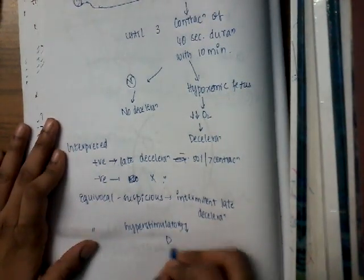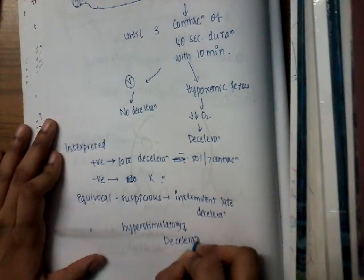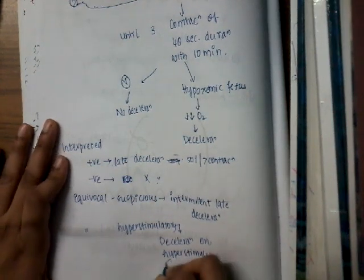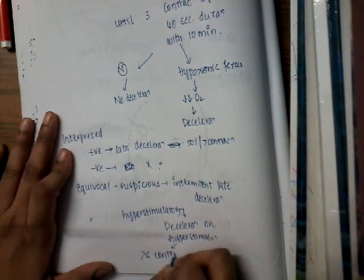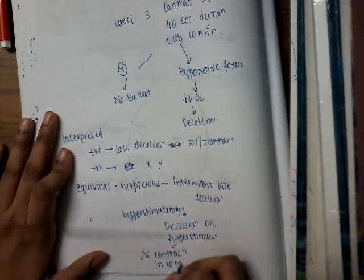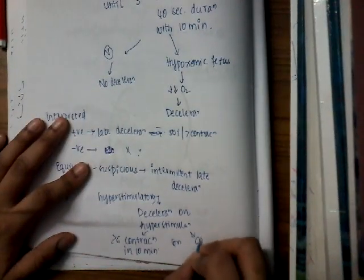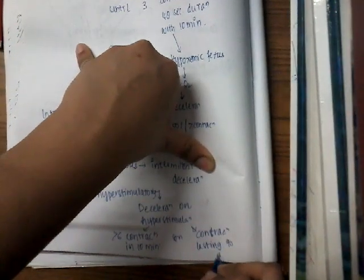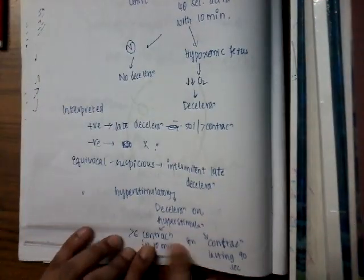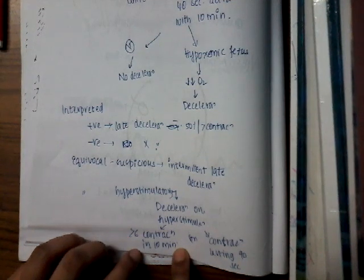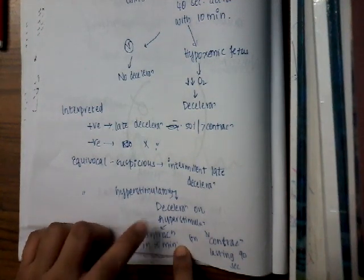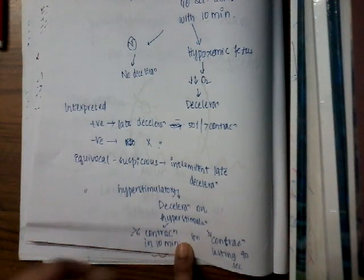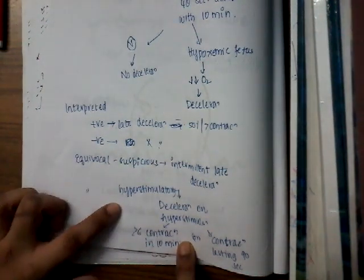The test can also be called equivocal hyperstimulatory. This occurs when decelerations are seen during hyperstimulation. Hyperstimulation is defined as more than 6 contractions in 10 minutes, or contractions lasting 90 seconds or longer. In either of these two scenarios — more than 6 contractions per 10 minutes or contractions lasting 90 seconds — it is called equivocal hyperstimulatory.